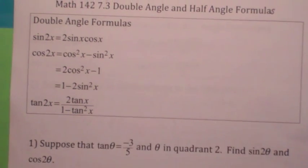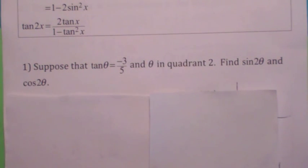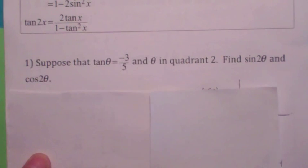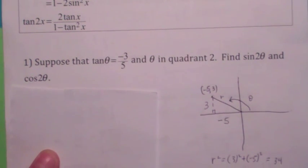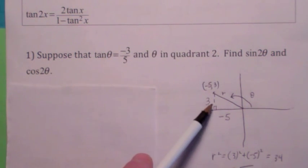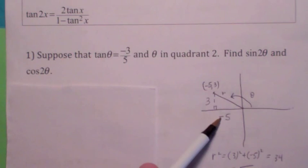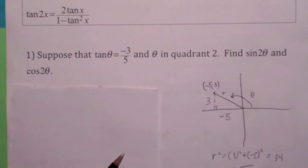Let's look at some examples. Suppose the tangent of theta is negative 3 fifths and theta is in quadrant 2. You want to find the sine of 2 theta and the cosine of 2 theta. The nice thing about the double angle formulas is that you don't have to worry about the sign — whether it's positive or negative — because it takes care of itself. Draw a picture. We're in the second quadrant, so the y coordinate is 3, the x coordinate is negative 5, and r becomes the square root of 34, which is the hypotenuse.